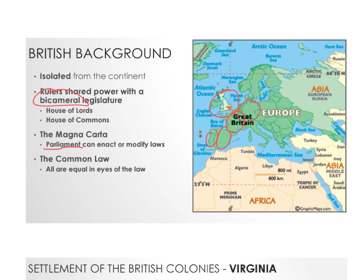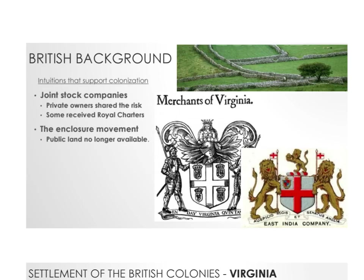What also makes Britain different is the Magna Carta — Parliament can enact or modify laws, not just a king. Every other country had monarchy rule. Britain also had the concept of common law, meaning everybody is equal in the eyes of the law. These factors are what lead the colonies to develop so differently compared to Spanish or French colonies, and why we feel we have those rights we're supposed to have.